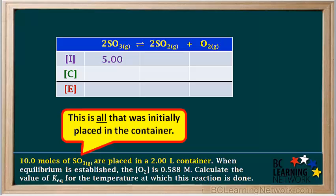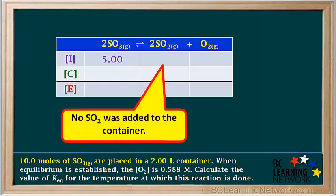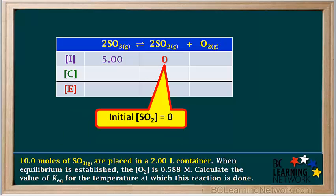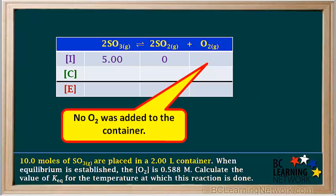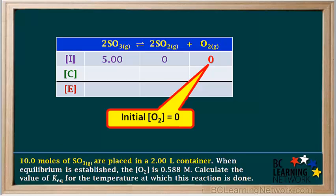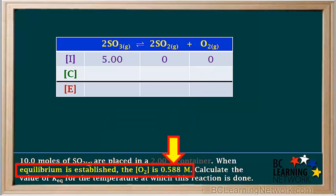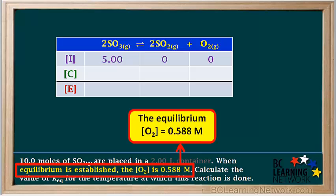When we read the question, we see that the 10 moles of SO3 are all that was added to the container initially. Since SO2 wasn't mentioned, we can assume no SO2 was added initially, so the initial concentration of SO2 is zero. Similarly, O2 wasn't mentioned either, so no O2 is added initially, and its initial concentration is also zero. The question tells us that when equilibrium is established, the concentration of O2 is 0.588 molar, so we write 0.588 in the equilibrium cell for O2.